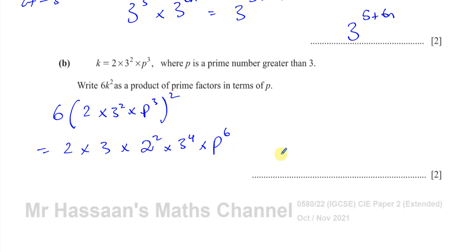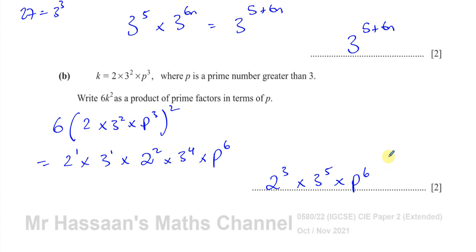Alright, so now I've got 2 times 2 squared, which is 2 cubed, 3 times 3 to the power of 4, which is 3 to the power of 5. These are like to the power of 1, and I'm left with times p to the power of 6. So this is now your answer. This is a product of prime factors in terms of p. Simple as that. There's your answer.